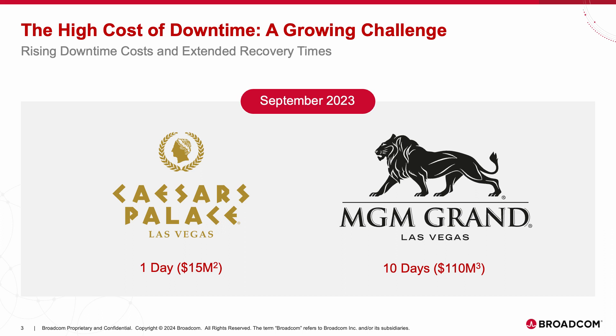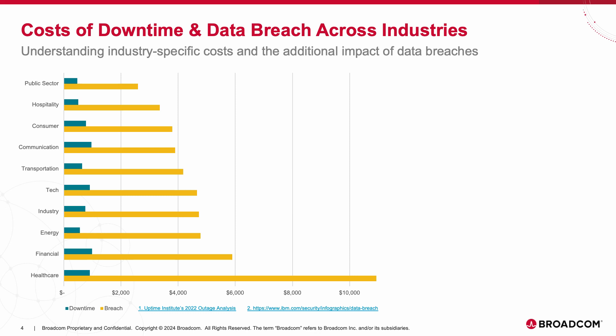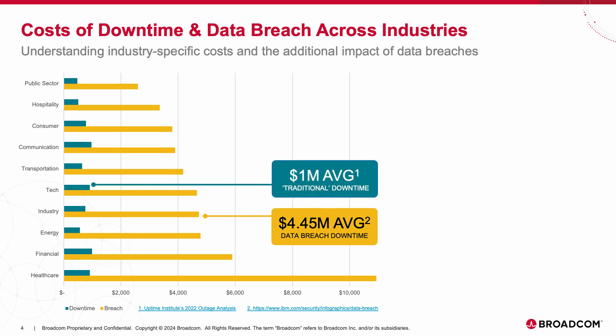Disasters come in many forms, and one of the newer forms is data breaches. While downtime is always harmful, its impact varies significantly depending on the industry sector, with seasonal considerations and contractual obligations playing crucial roles. This chart shows downtime's financial impact for two major categories — data breaches and traditional reasons such as hardware or software failures, power outages, or natural disasters. At approximately $4.5 million, the average cost of downtime caused by data breaches is significantly more than the cost of downtime caused by traditional reasons, which is about $1 million.